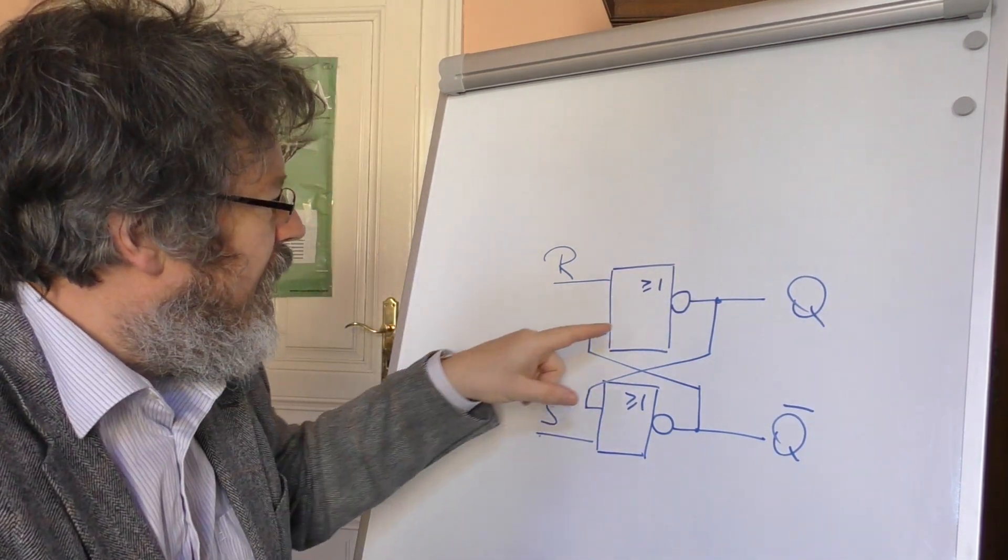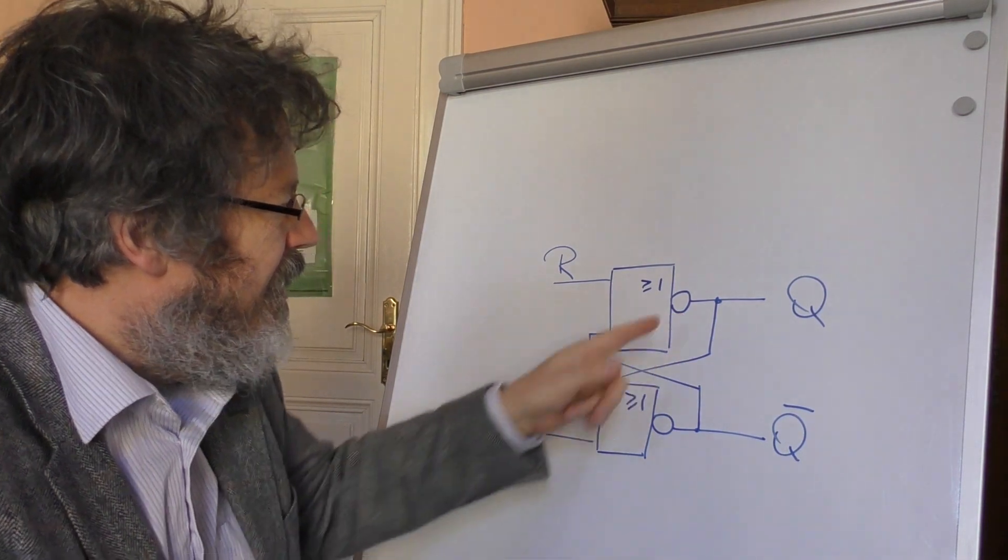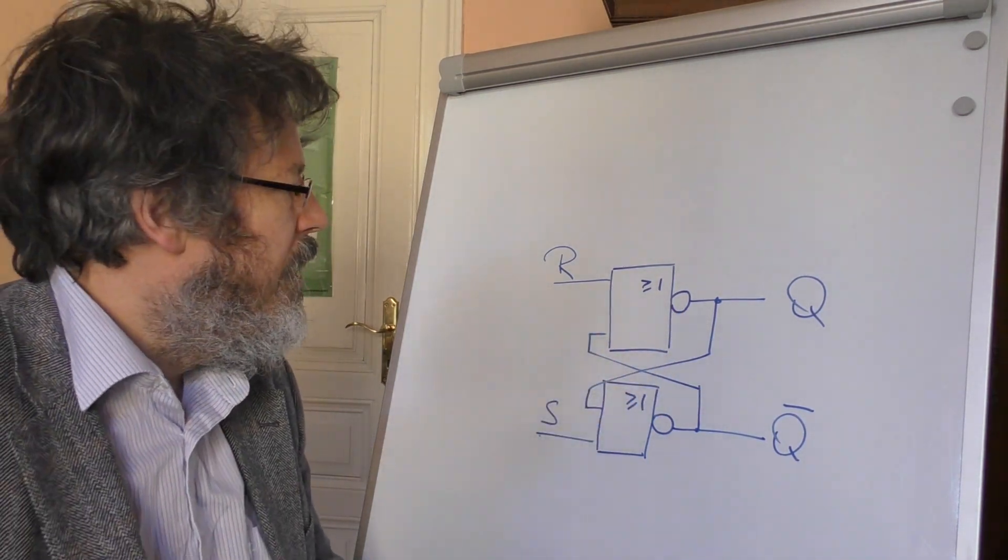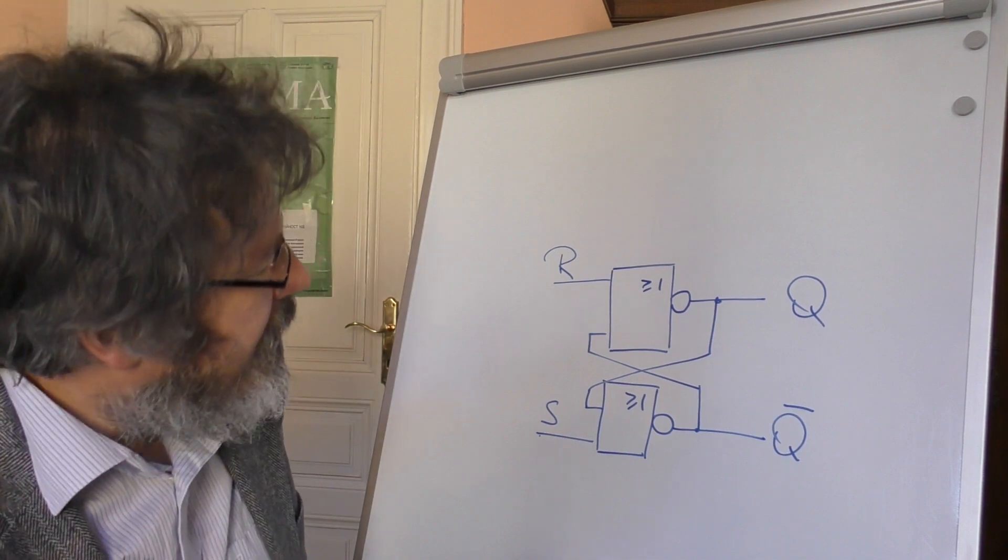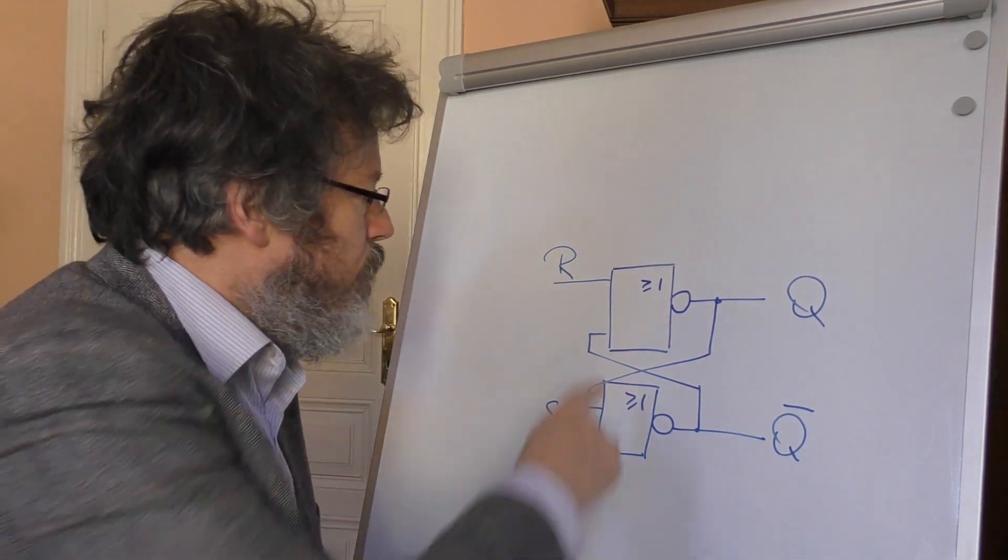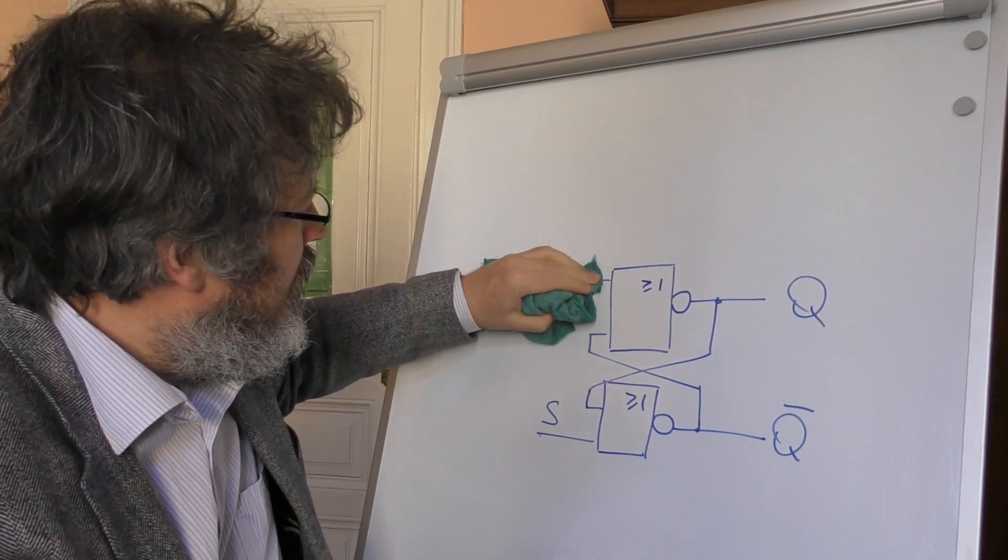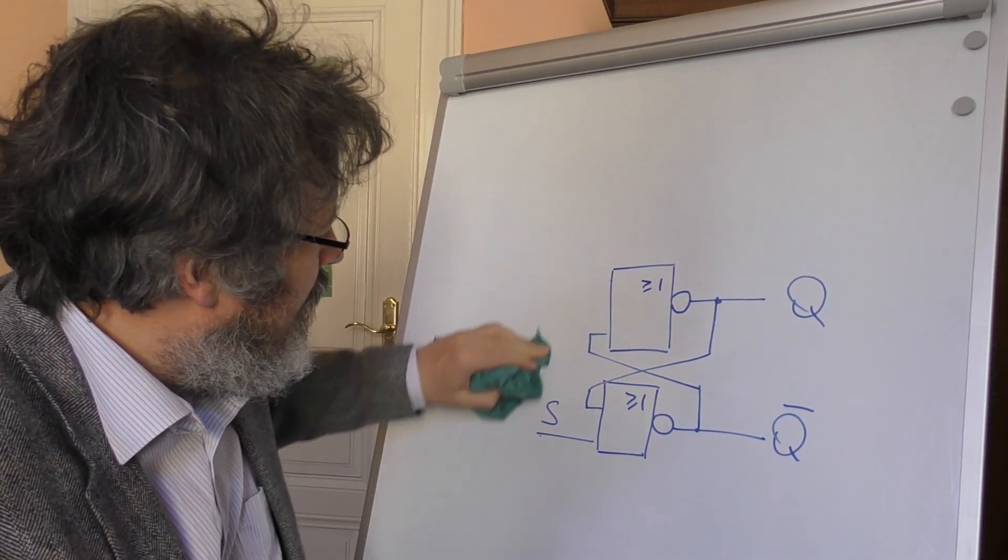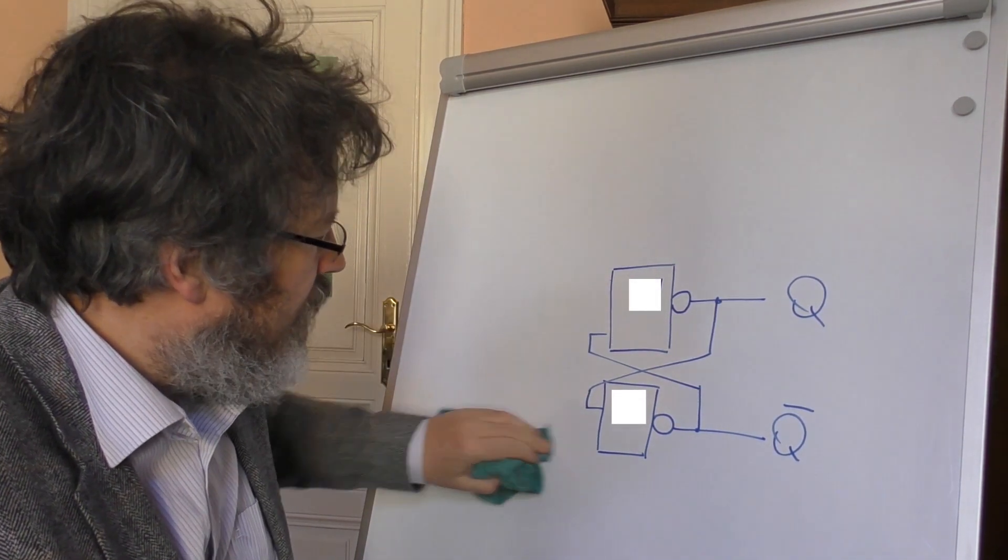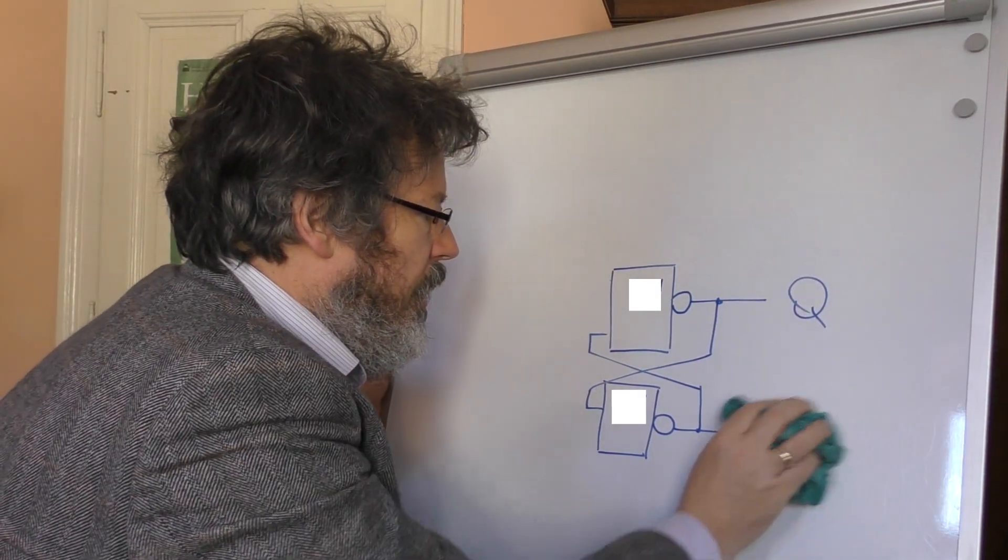And it becomes quite clear that the crucial elements are actually these inverter structures which we have here. So what you can also do is to take only two inverters. We forget that it's a NOR gate here, and make it turn around.